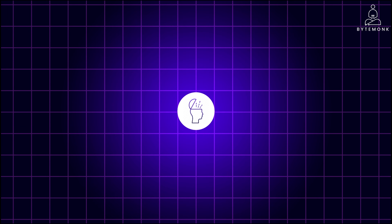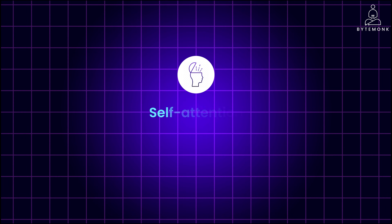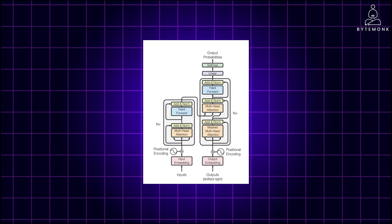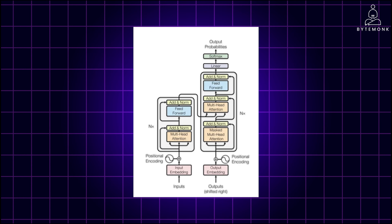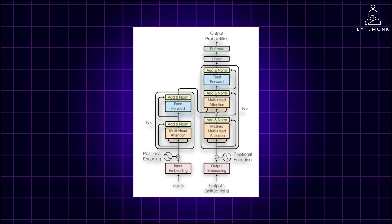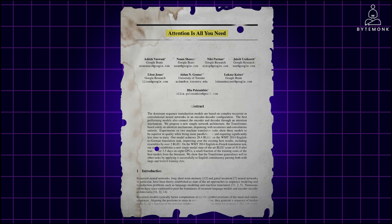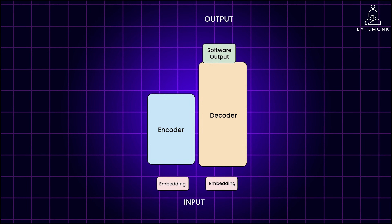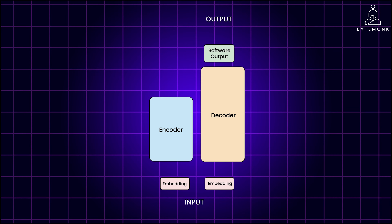Now that you have learned a fundamental aspect of the transformer architecture — self-attention — let's provide an overview of how the model operates at a high level. This is the original published transformer architecture derived from the paper 'Attention Is All You Need,' and here is a simplified high-level diagram of the same architecture to understand its essential parts easily.